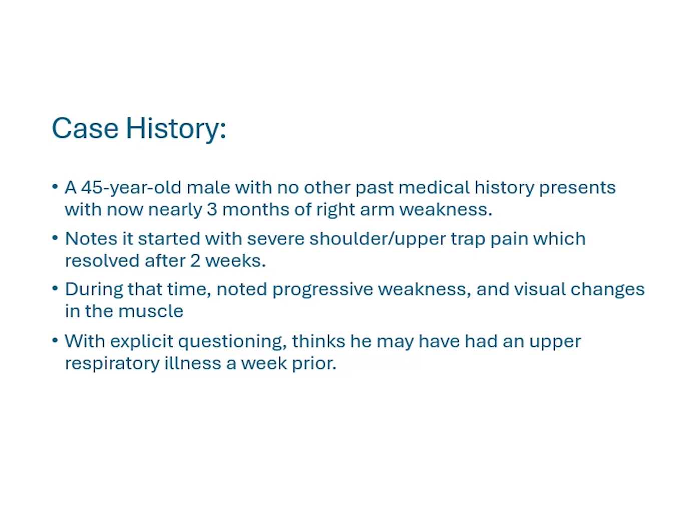He said it started with severe shoulder pain in the upper trapezius radiating into the scapular area about three months ago, but it did seem to resolve without any specific intervention after about two to three weeks. During that time, he noted progressive weakness, as well as some visual changes in the muscles of the right arm, and his partner also noticed some visual changes around the scapular region. With explicit questioning, the patient reported there was an upper respiratory illness going around about a week prior, but didn't think much of it at the time.